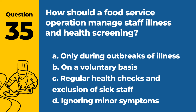Question 35. How should a food service operation manage staff illness and health screening? a. Only during outbreaks of illness. b. On a voluntary basis. c. Regular health checks and exclusion of sick staff. d. Ignoring minor symptoms. Answer: c. Regular health checks and exclusion of sick staff. This is vital to prevent the spread of illness in a food service environment.